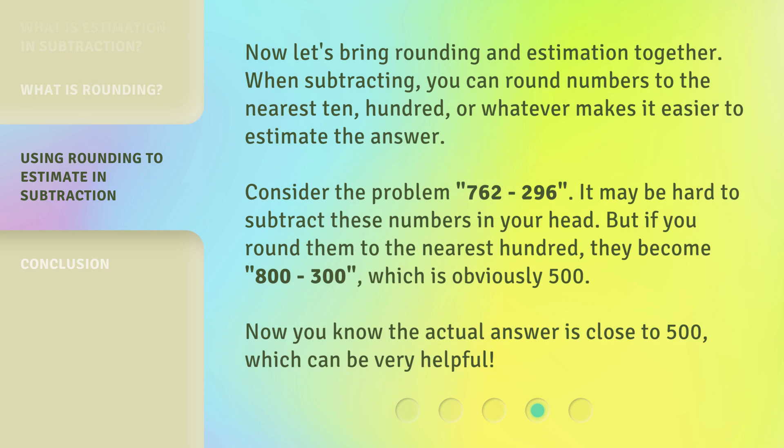Now let's bring rounding and estimation together. When subtracting, you can round numbers to the nearest 10, 100, or whatever makes it easier to estimate the answer. Consider the problem, 762 to 296. It may be hard to subtract these numbers in your head. But if you round them to the nearest 100, they become 800 to 300, which is obviously 500. Now you know the actual answer is close to 500, which can be very helpful.